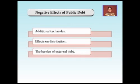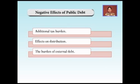Next is the burden of external debt. Public debt can be internal or external. Internal debt can be voluntary or compulsory, while external debt is only voluntary. In the case of internal debt, the government may refuse repayment, but in the case of external debt, the government cannot afford to do that. External debt keeps increasing over time, and sometimes the government has to borrow even more from other countries, increasing the burden on people and the government.